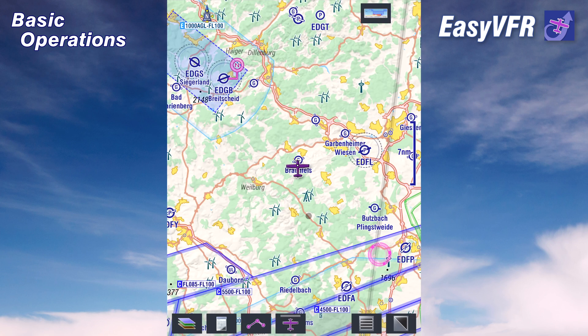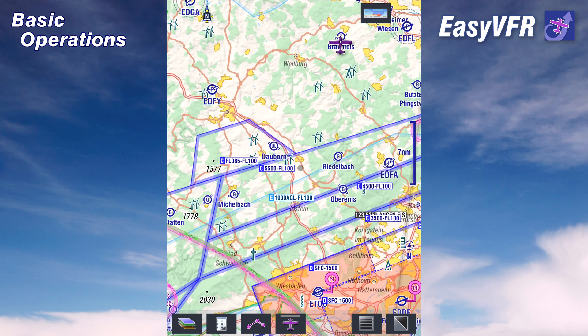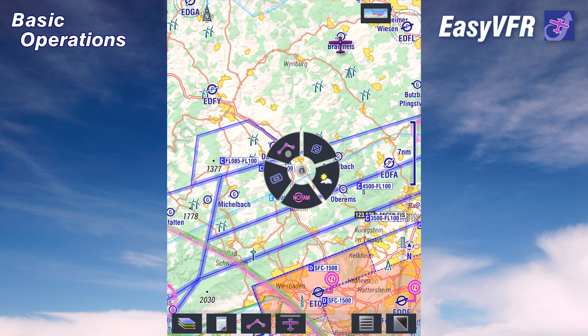The main idea to work with EZVFR is: whenever you tap somewhere on the map once, this info wheel appears. And from this info wheel you have access to a lot of data. You can do route planning from this tapping point, get airport information, weather information, the NOTAMs valid at your clicking point, or check the exact airspace structure at your clicking point.